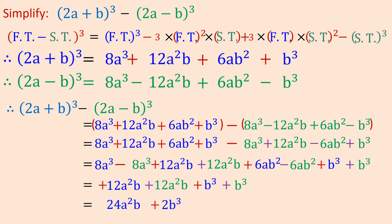Now for the second bracket, the sign will change because there is a minus sign outside. Minus 8a³ becomes plus 8a³. The plus 12a²b becomes minus 12a²b. The plus 6ab² becomes minus 6ab², and the minus b³ becomes plus b³. When you multiply by minus 1, the sign changes because two opposite signs multiplied give a negative, and two same signs give a positive. So outside the bracket, if there is a minus sign, the signs inside all change.